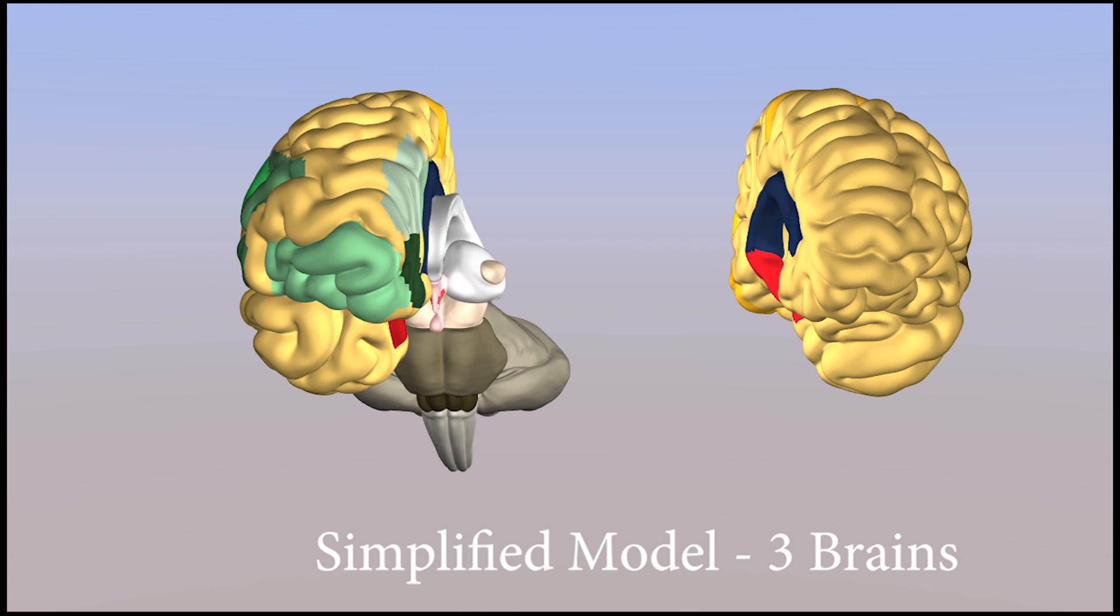We'll simplify to start by just looking at three brains. You'll see it changing from the complex colors down to four colors.